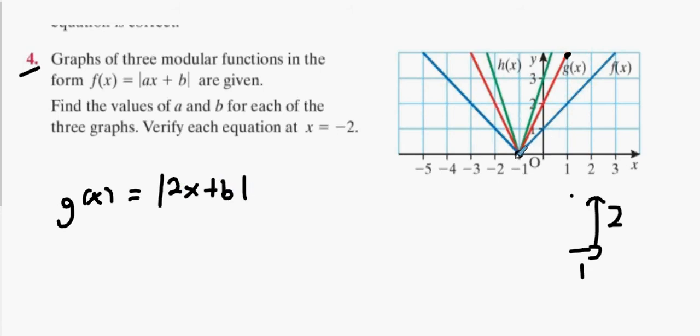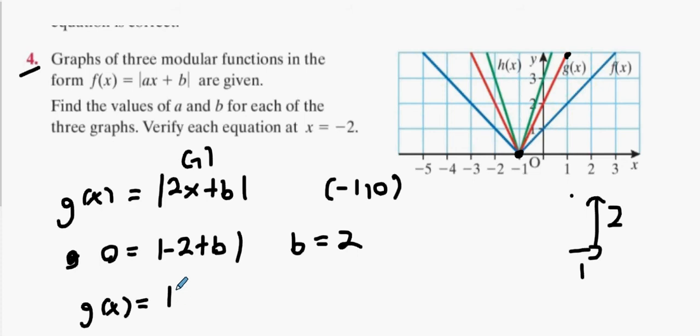Now we're going to test where it crosses the x-axis. Where does it cross the x-axis? Minus one and zero. So when x equals minus one, the answer is zero. So what does that mean about b? b will have to be equal to two. So what's our answer? Two x plus two.